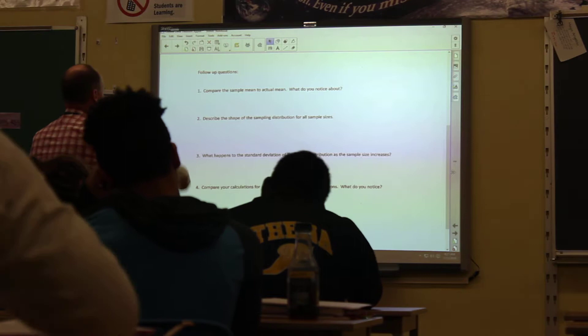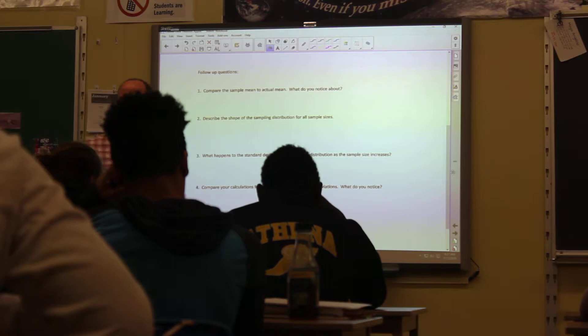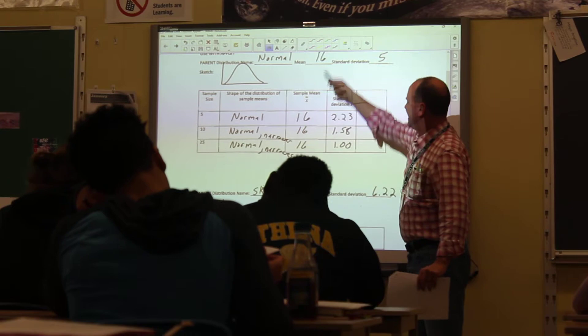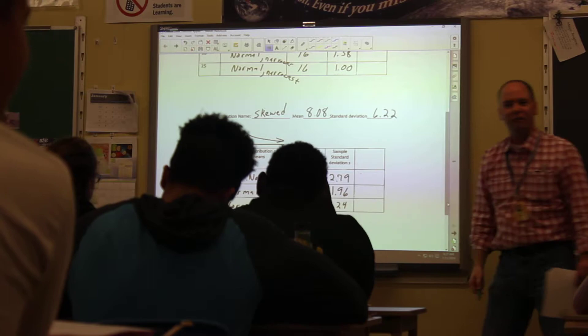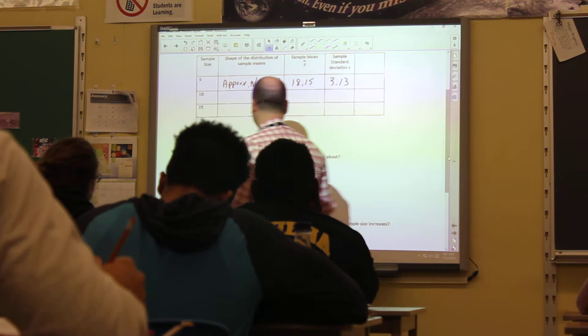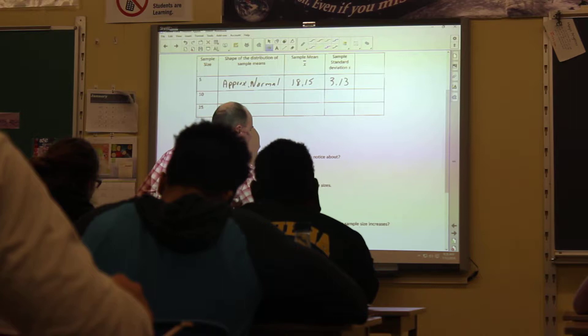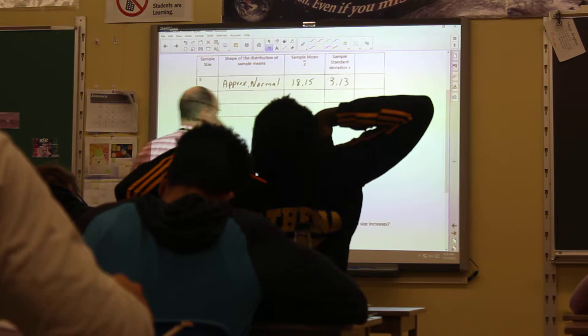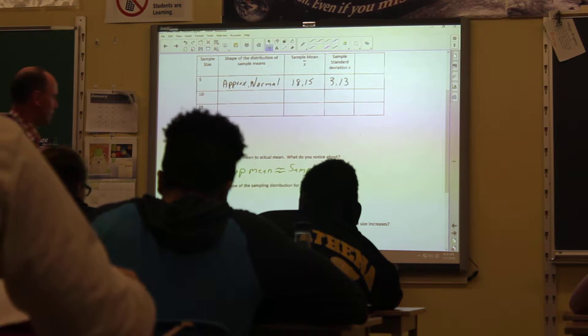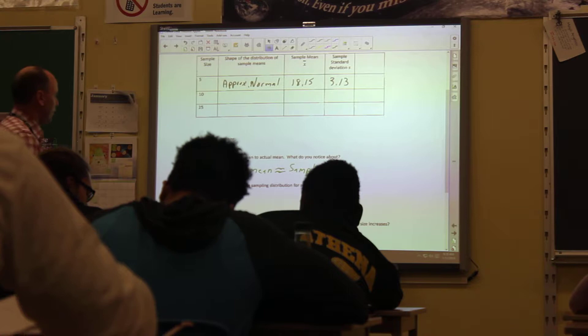These questions at the bottom are kind of important. I want to kind of nail these home. Compare the sample mean to the actual mean. So for each of those three, what did we find out about the sample mean? Same. Same, or awfully dang close. 8.08. This guy was a little bit off, but they're pretty much the same. So what we're getting right here is population mean equals sample mean.